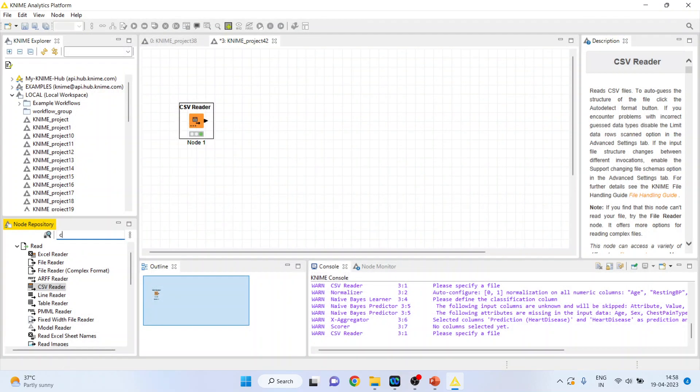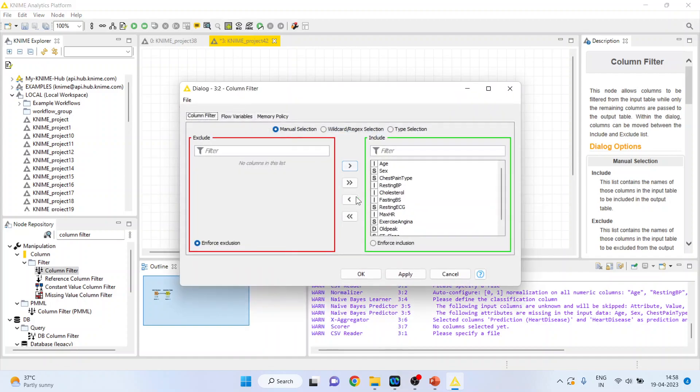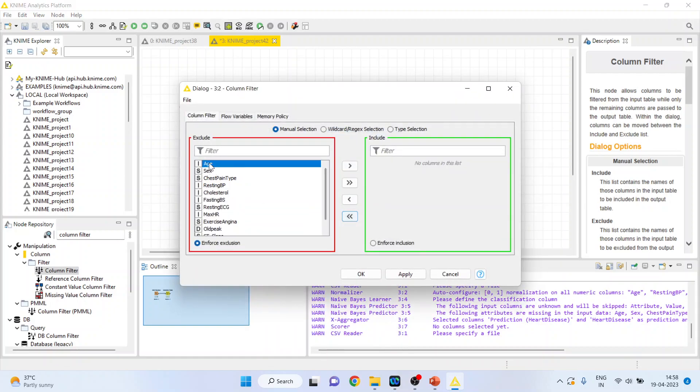So I'll activate the column filter so that I can only include those variables which are of our interest. Right click on it and configure. Remove all other variables and I'll include age, resting blood pressure, cholesterol.